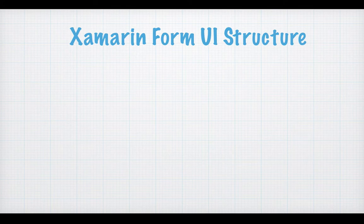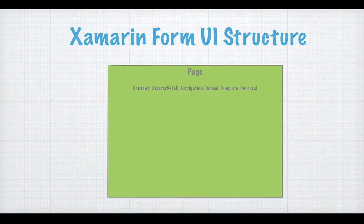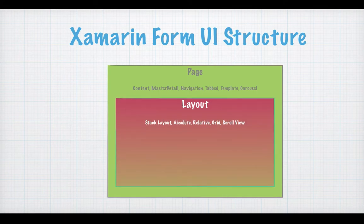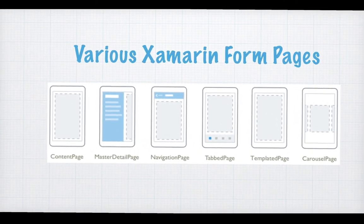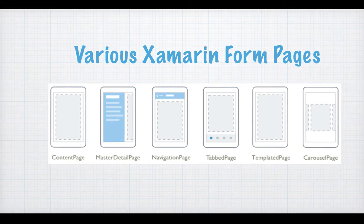Let's take a look back at what makes a Xamarin.Forms page. You have seen this in previous videos — you always have a page which maintains all of the visible area on the screen, then it contains a layout, and inside the layout you form different kinds of views like label, date picker, or any kind of table cell. The various kinds of form pages include the content page, master detail page, navigation page, tab page, etc.